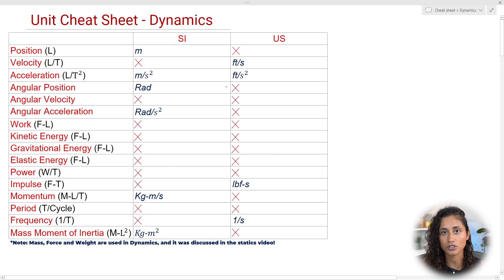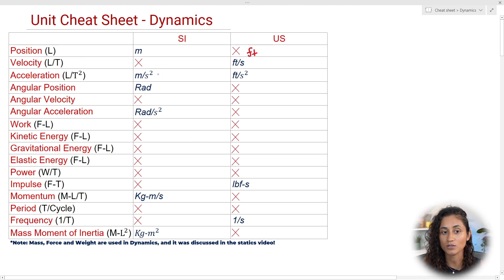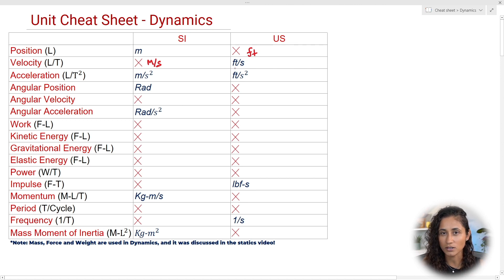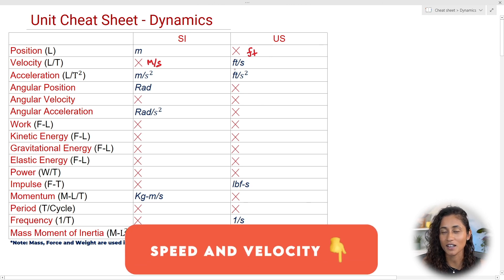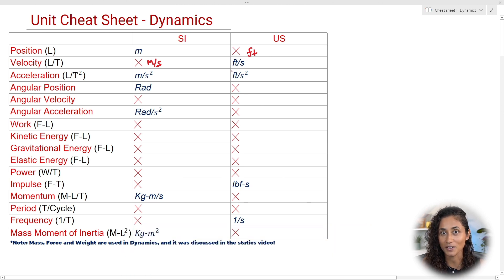The first thing we have is position, which is pretty straightforward — it has the units of length, so for SI that would be meters, and for US that would be feet. Velocity has the units of length per time. Keep in mind that velocity and speed have the same units: for SI that's meters per second, and for US that's feet per second. Do you guys know the difference between speed and velocity? If not, comment 'speed and velocity' below and maybe I'll make a video on that.